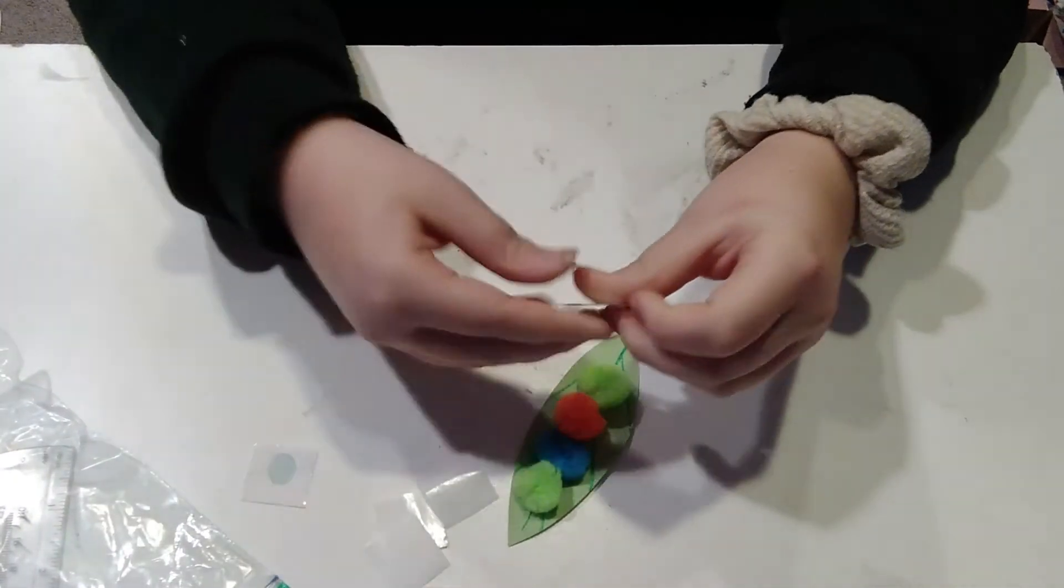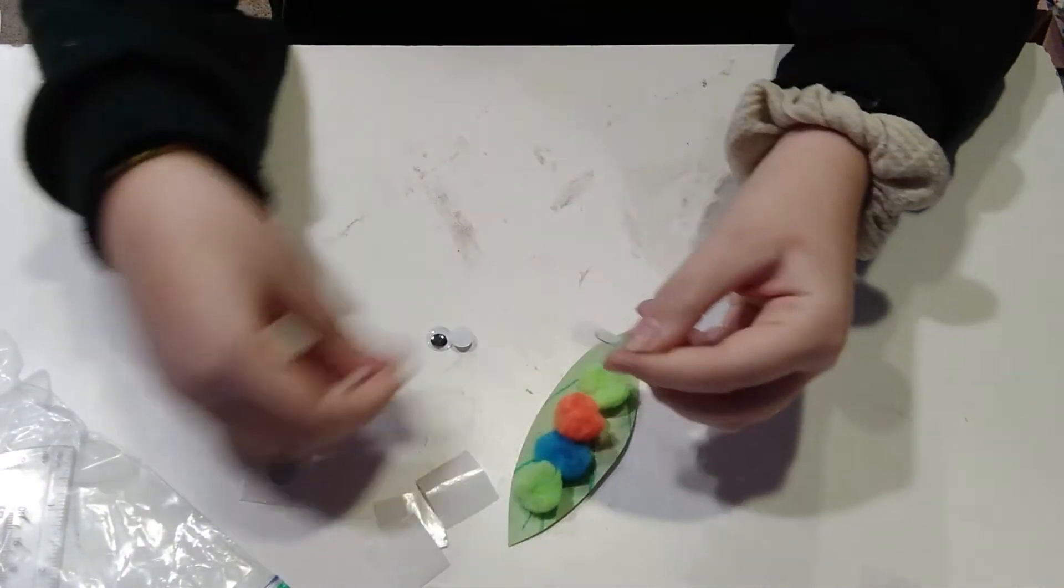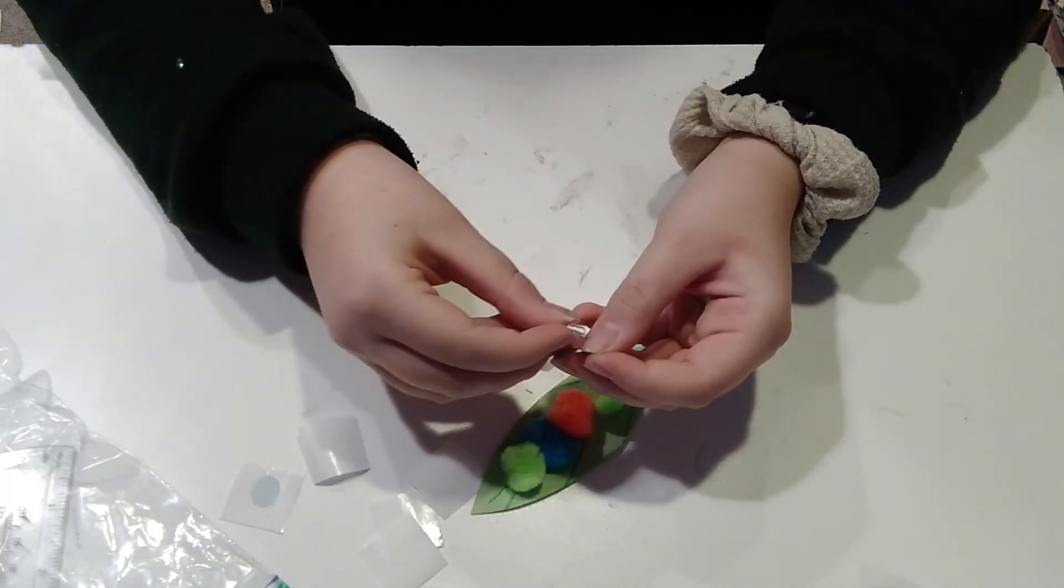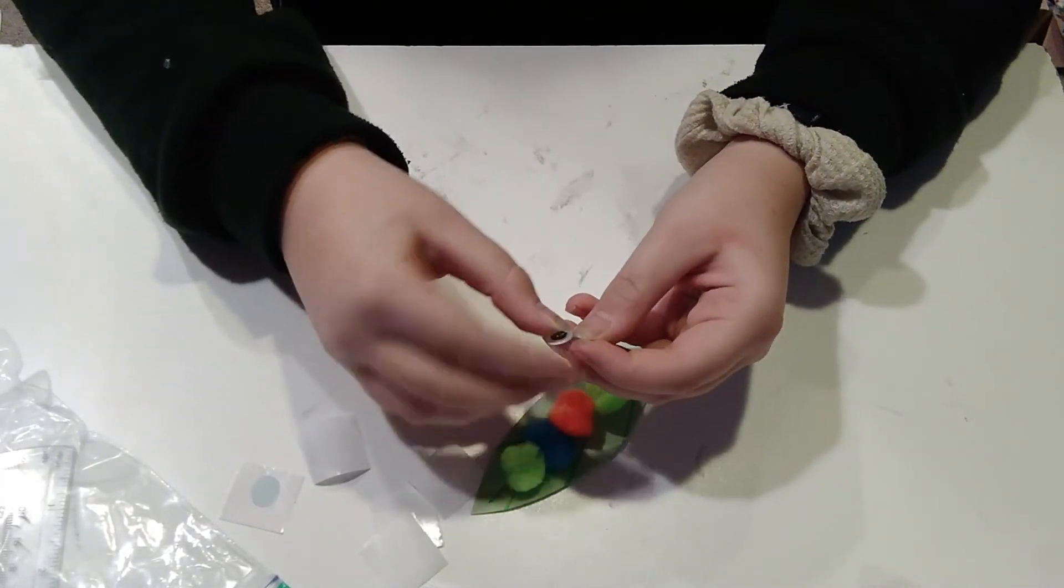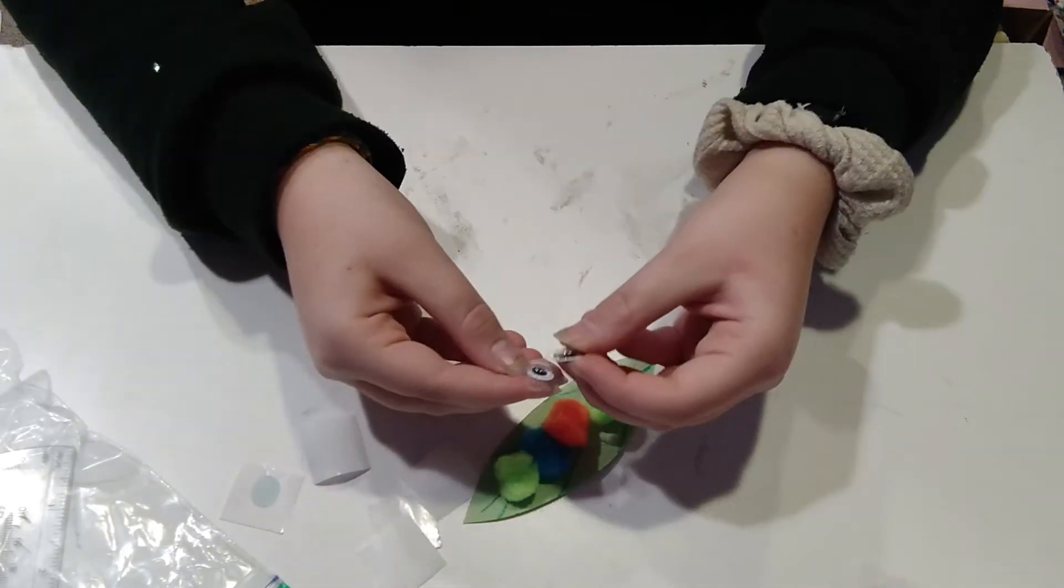For our final step, we will take yet more glue dots and we are going to put them onto each of the different googly eyes so that that will create our final product of a sweet little caterpillar on a leaf.